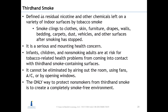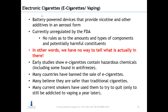Thirdhand smoke is defined as residual nicotine and other chemicals left on indoor surfaces such as clothes, furniture, drapes, carpets, and bedding — essentially secondhand smoke that has settled indoors. It is a serious health concern; infants, children, and non-smoking adults are at risk from contact with thirdhand smoke-containing surfaces. You cannot eliminate it by opening windows or using fans. The only way to protect non-smokers from thirdhand smoke is to create a completely smoke-free environment.